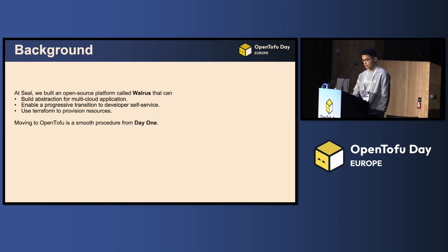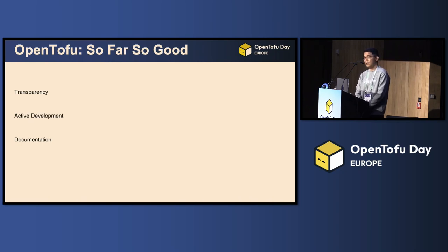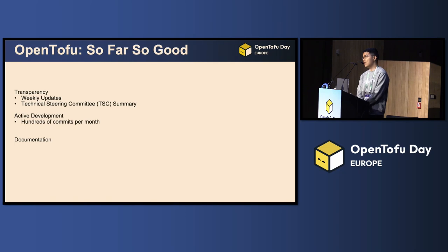Now what's the next move? A few months have passed since the first release, so let me do a quick wrap-up. I think OpenTofu is performing well, thanks to the maintenance team. The transparency is commendable — we have weekly updates, TSC summaries, so users can easily follow the progress and direction of the project. And we have hundreds of commits per month, which is comparable to Terraform.